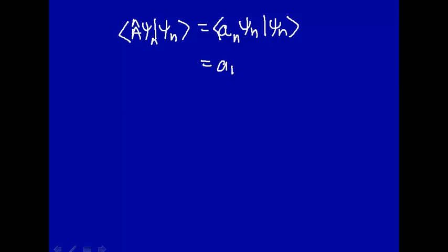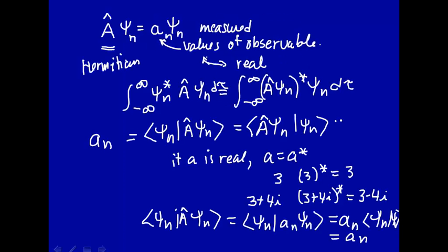And remember, on this side is the complex conjugate, so we have to rewrite this, take the complex conjugate of a sub n, that eigenvalue, times psi n, psi n. And that's just equal to a n, complex conjugate.